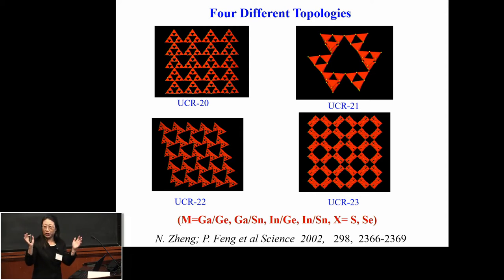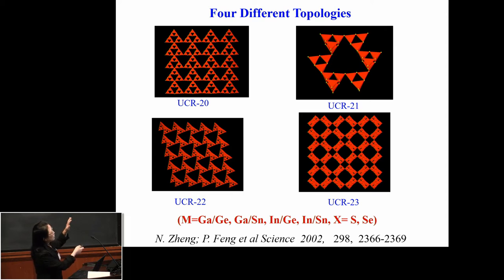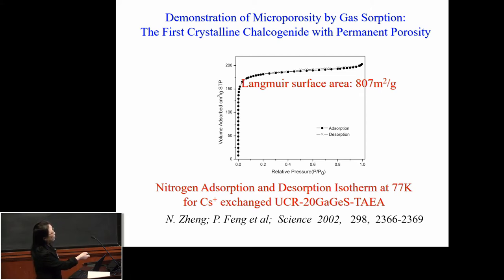By using the right reaction conditions — my students did a lot of work — we found conditions that give us different zeolite-type materials with those different chemical compositions. Some of those are novel structures, some share zeolite topology but some differ. These materials have high surface area just like zeolite. For example, the gallium-germanium sulfide composition has a surface area of 807, comparable to zeolite-type materials, but with metal sulfide or selenide in the framework.